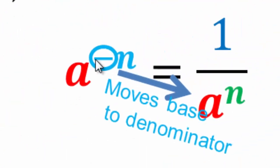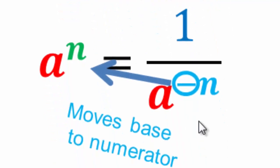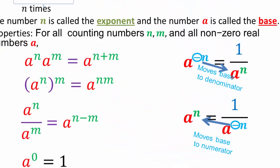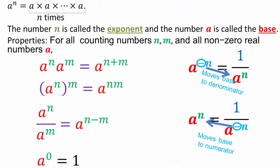If you have a base to a negative exponent, it simply moves the base to the denominator and gives a positive exponent. If you have a negative exponent in the denominator, you move the base to the numerator and get a positive exponent. This is going to help you do many, many different kinds of problems.